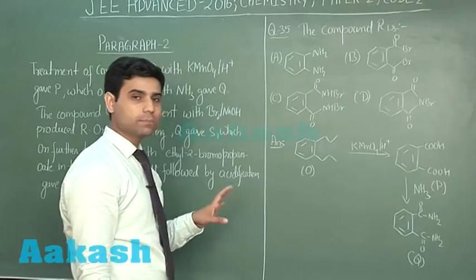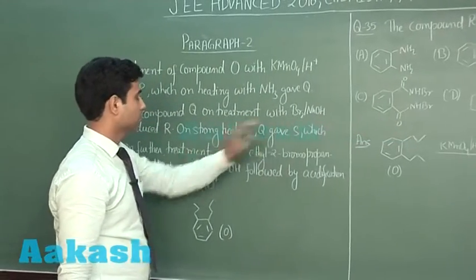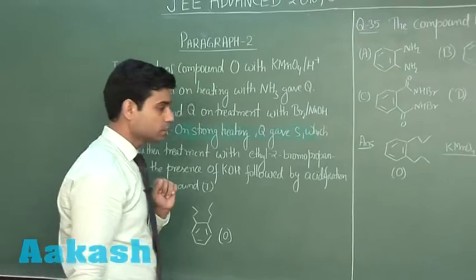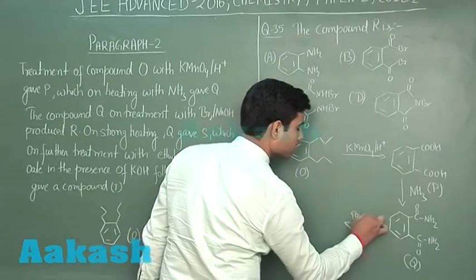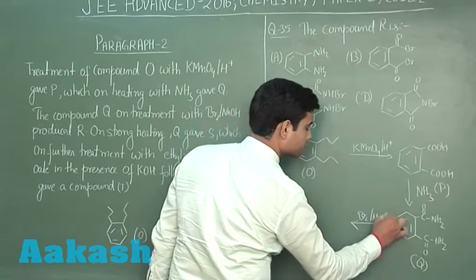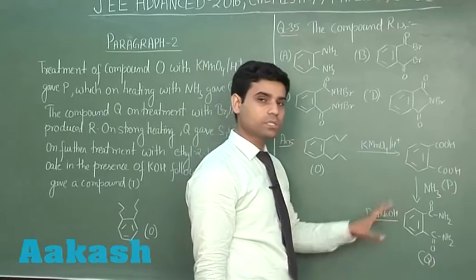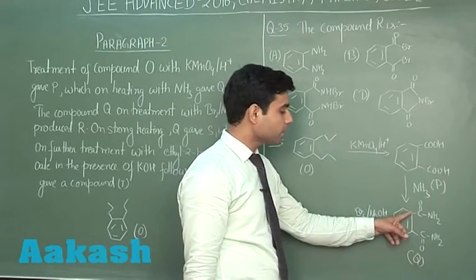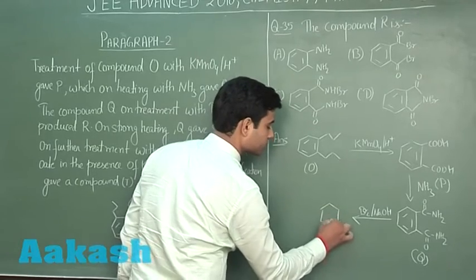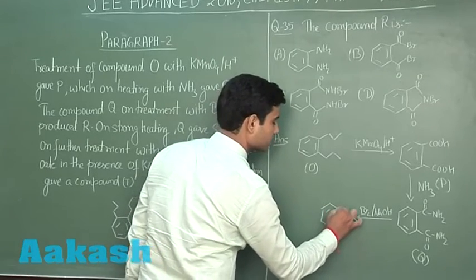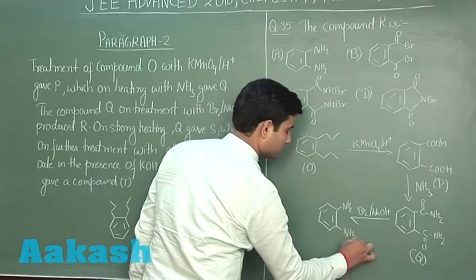Q on reaction with NaOH and Br2 gives us R. This is the Hofmann bromamide degradation reaction — we have Br2 and NaOH. The Hofmann bromamide degradation reaction results in the formation of an amine, so the NH2 group will be present here and here, at both positions.